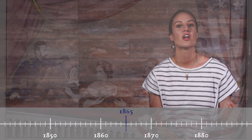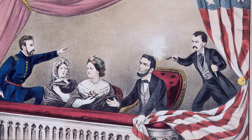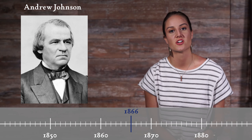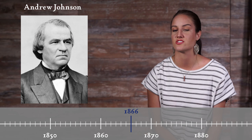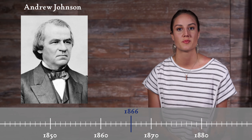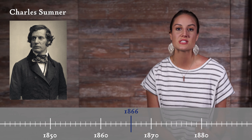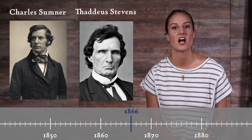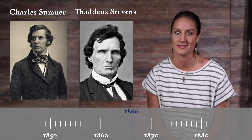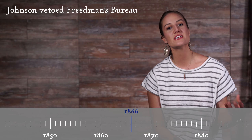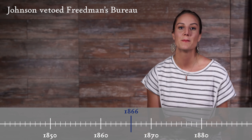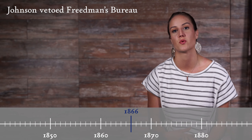On April 14th, 1865, President Lincoln was shot and died the next day. His Vice President Andrew Johnson became President. Johnson took a softer, some would argue less effective, approach to Reconstruction than Lincoln did, which upset the Radical Republicans. Led by Charles Sumner and Thaddeus Stevens, the Radicals in Congress decided to take things into their own hands, blocking the reincorporation of former Confederate states to Congress. Johnson also vetoed the renewal of the Freedmen's Bureau because he was opposed to federal support of such programs.